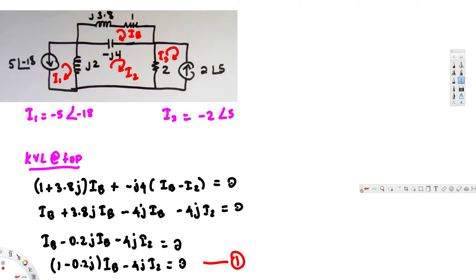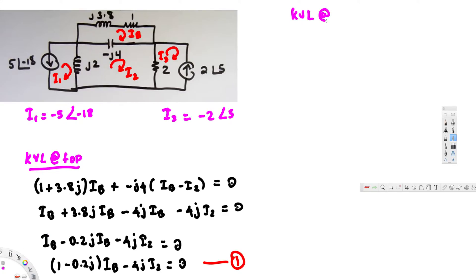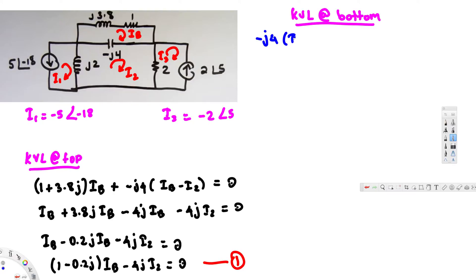Now let's apply KVL at the bottom mesh. Starting with the negative j4 impedance: that gives negative j4 times (i2 minus ib), since ib is going in the opposite direction. Then the current flows through the 2-ohm resistor, giving plus 2 times (i2 minus i3).